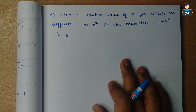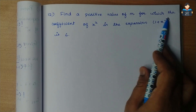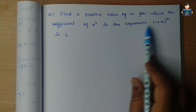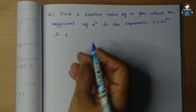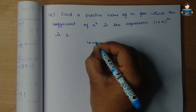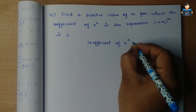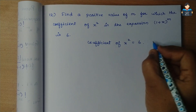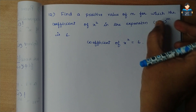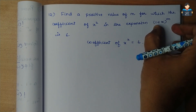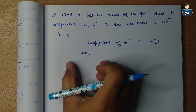Now the next problem, number 12. Find a positive value of m for which the coefficient of x square in the expansion of (1+x)^m is 6. So we need to find the coefficient of x square in this expansion and set it equal to 6.